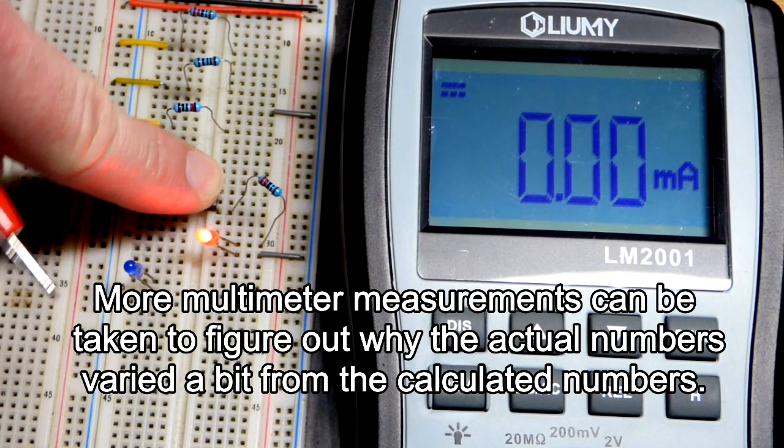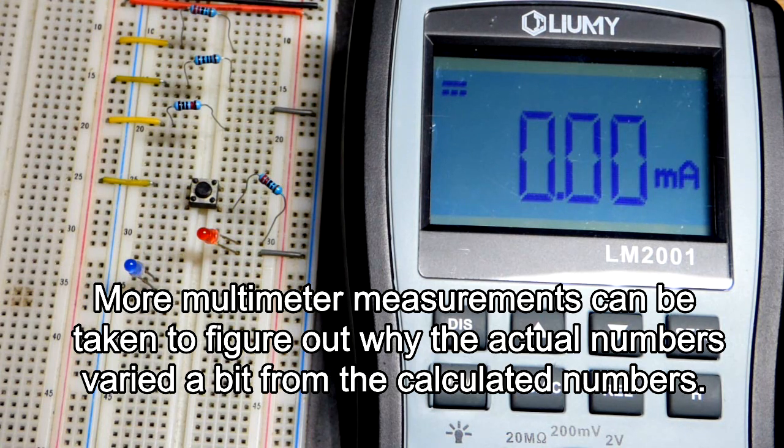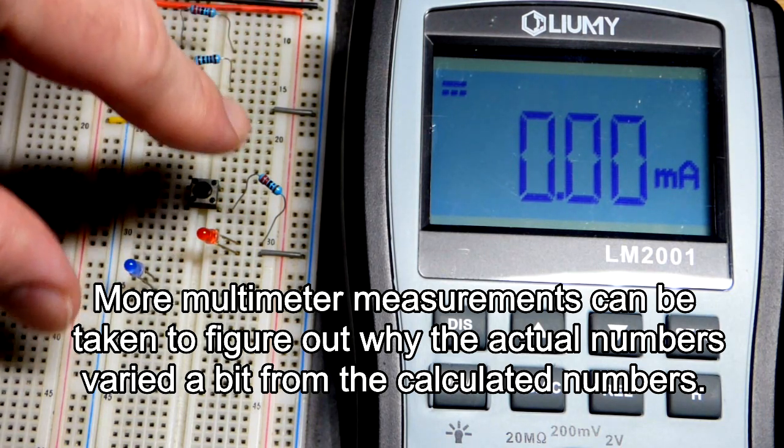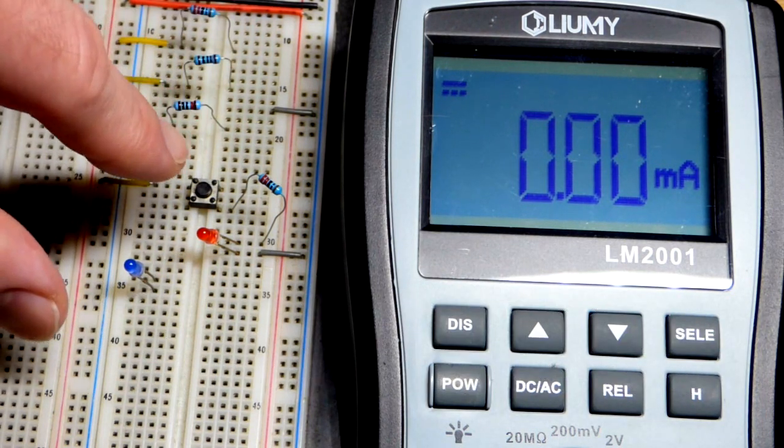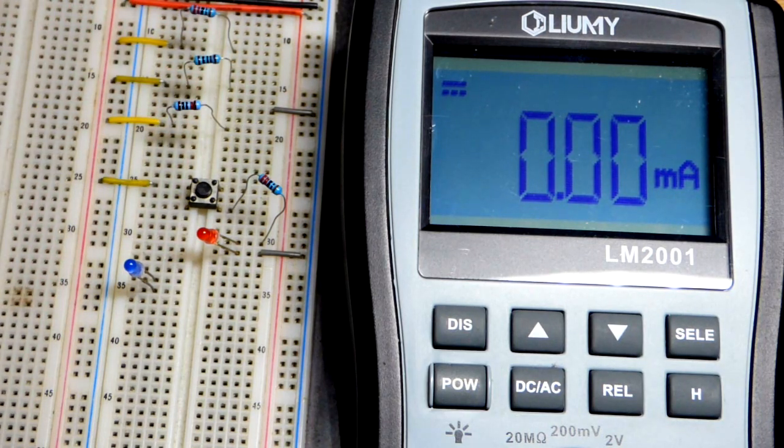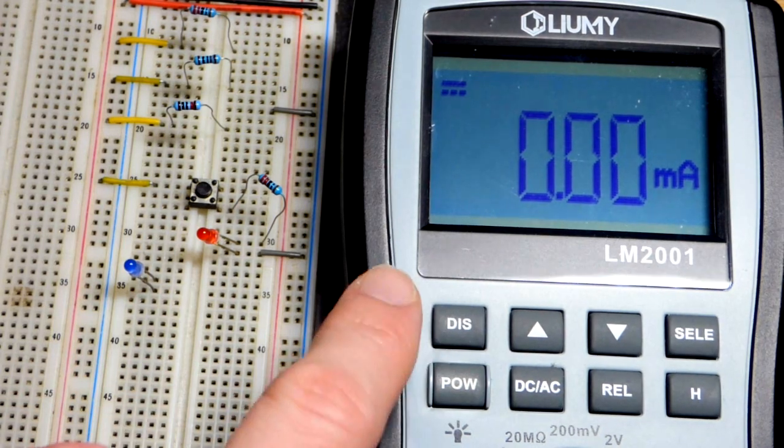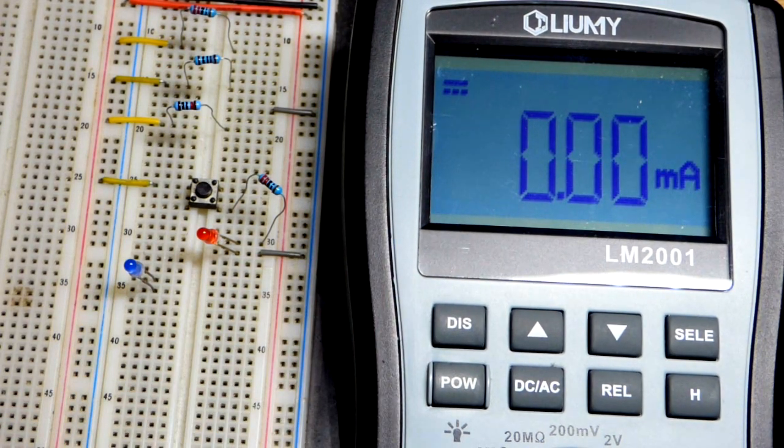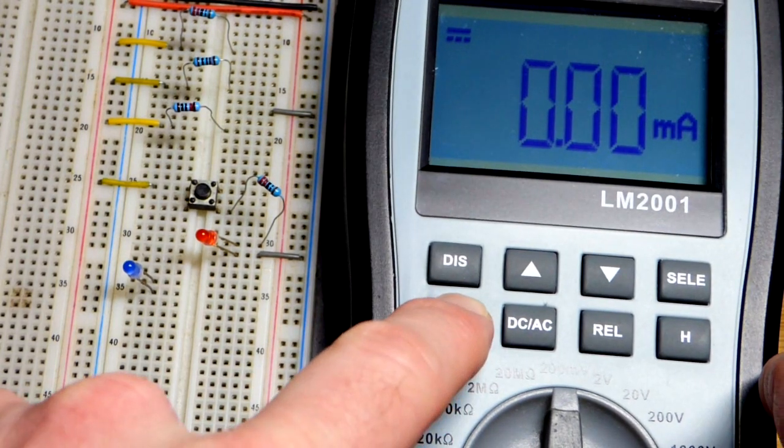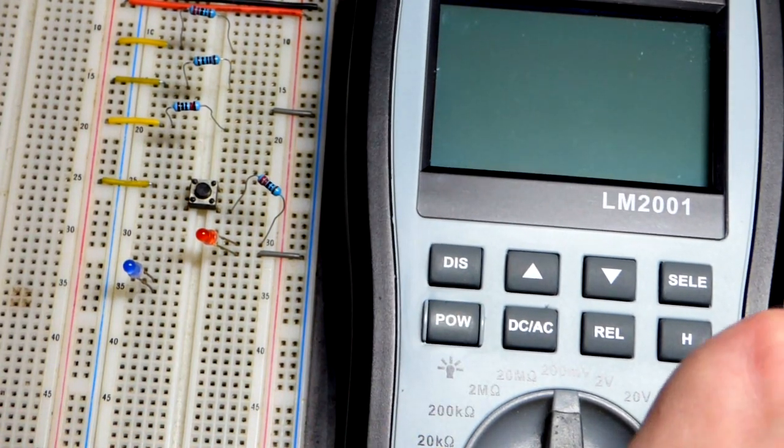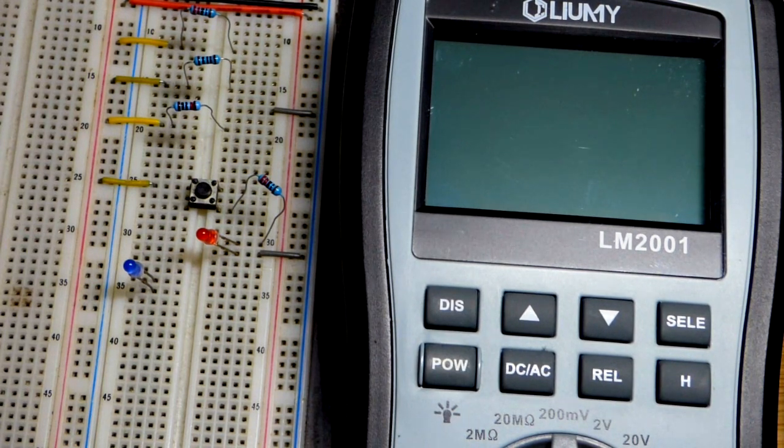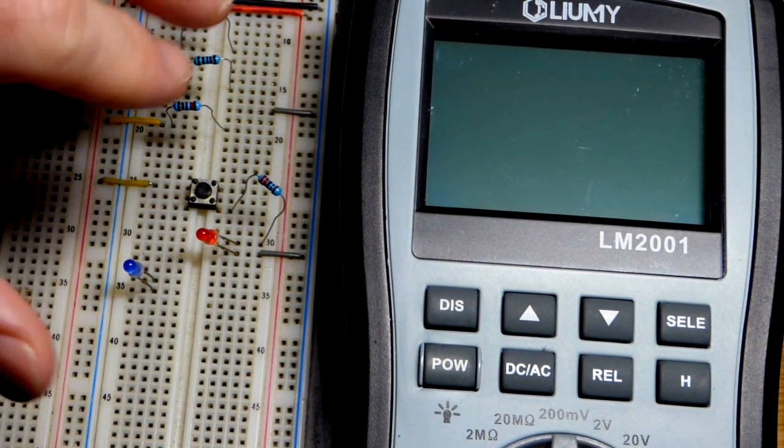So in any case, measuring current may seem intimidating at first. And it's actually not terribly useful. As I said before, I did all the calculations with how much current is going to flow through these different situations here. And that's all I needed. But sometimes you may want to verify things with the multimeter. So again, this particular one, you have to hit the power button, turn it off, always turn it off. But in any case, I'll take other current measurements in other videos. We're going to keep this one basic right here.